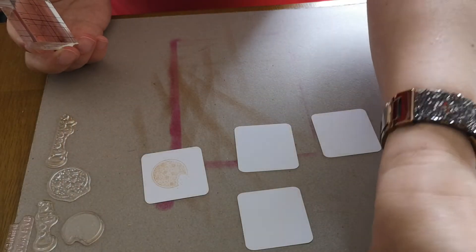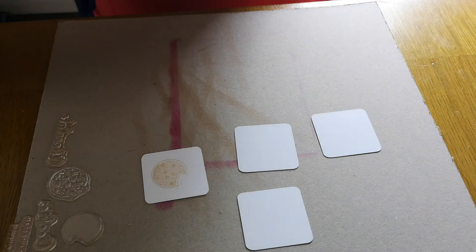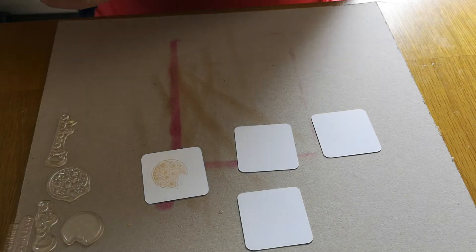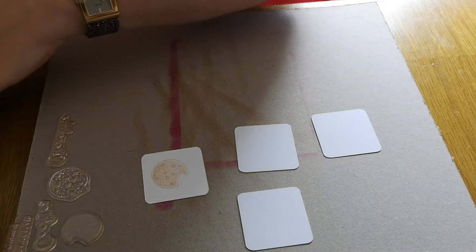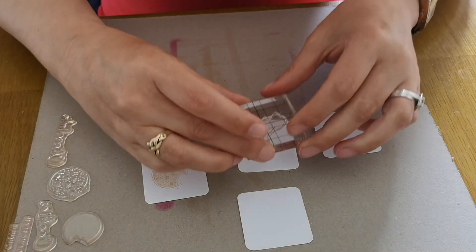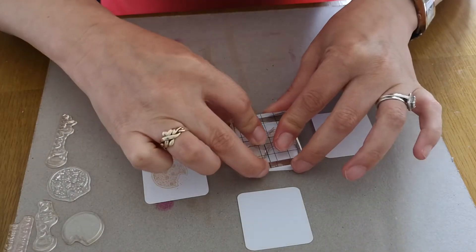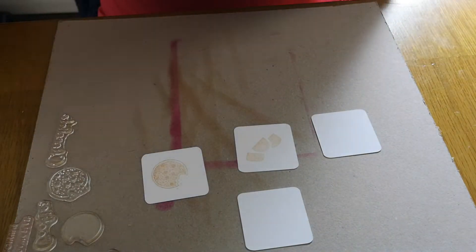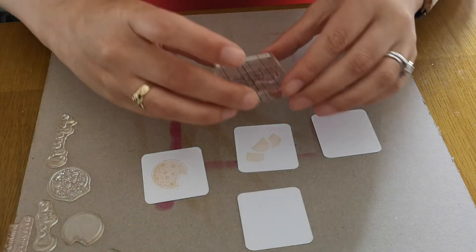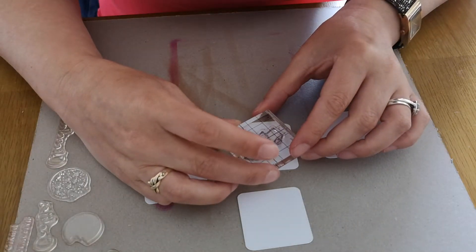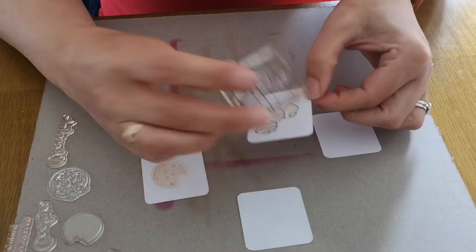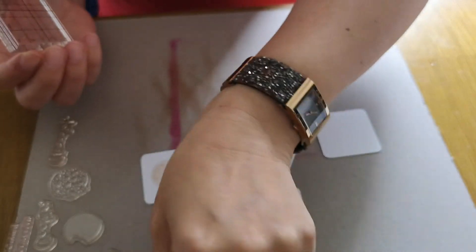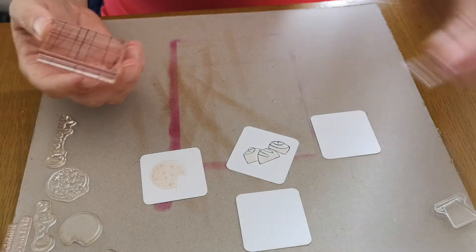So I think that looks okay, happy with that. Next I'm going to do the chocolate, but I'm going to use a bit of black with the chocolate as well so that you get a two-tone effect. I'm using black ink for this and line that up. It's not perfect but it's okay. And the coffee cup.